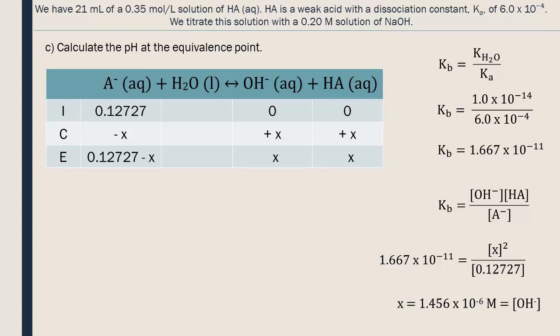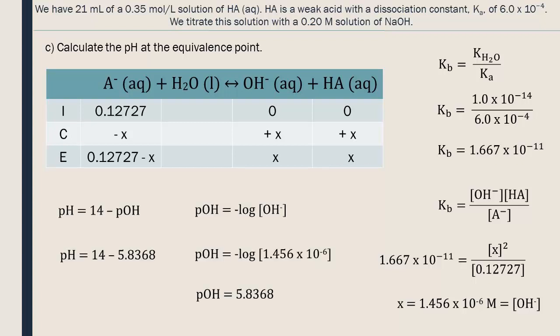Now we need to determine the pH. First we will use the pOH, then the pH. You could also calculate the concentration of H plus and then the pH. We round our answer to two significant digits. The pH at the equivalence point is 8.16.